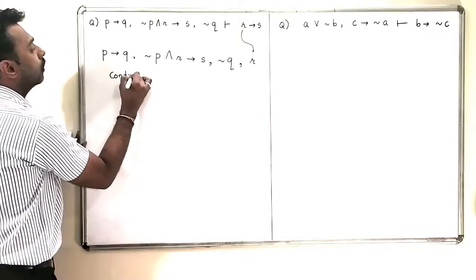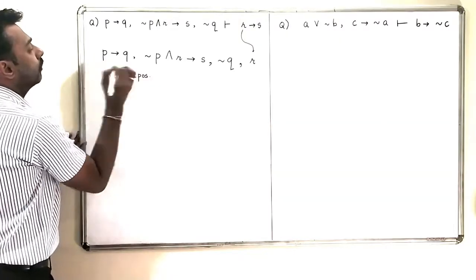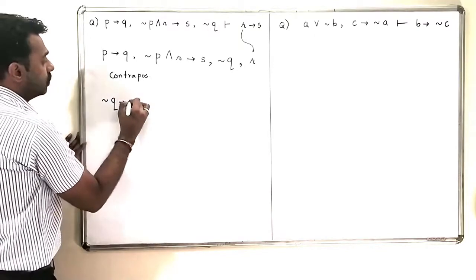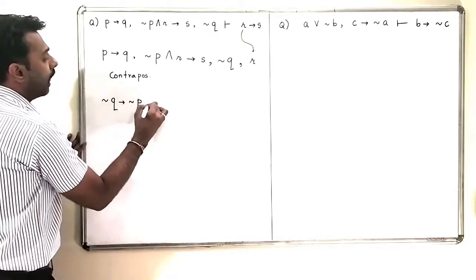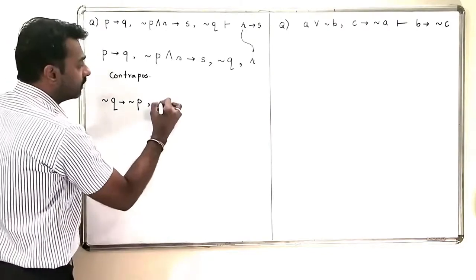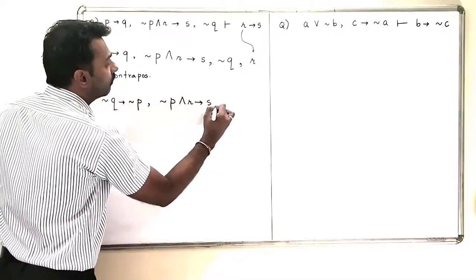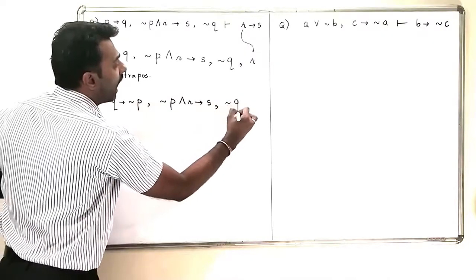I will take the contrapositive of this. So, when I take the contrapositive of the first one, I am going to get negation Q implies negation P. Others, I am going to keep them as it is. Negation P and R implies S with negation Q and R.